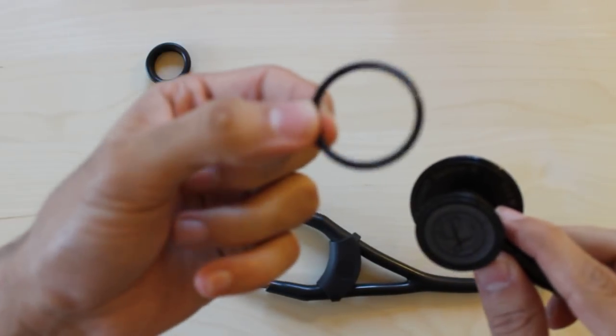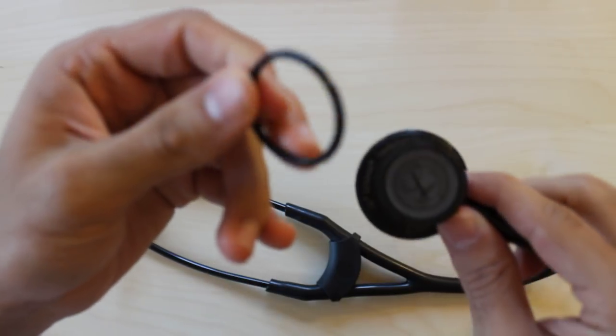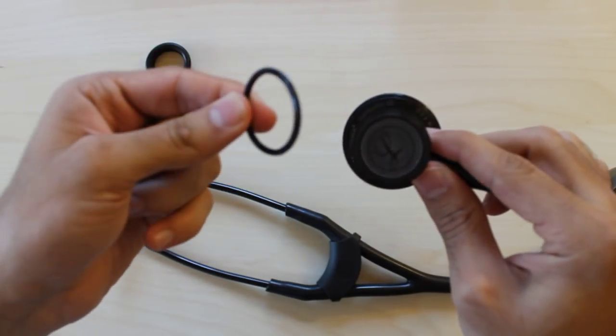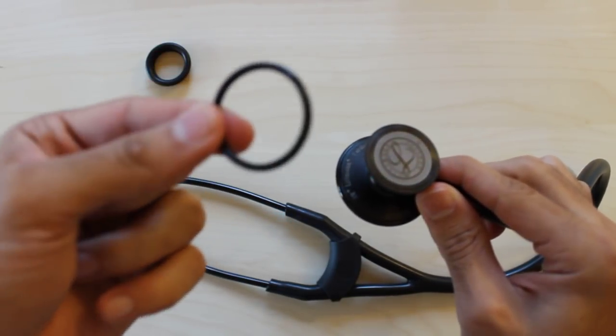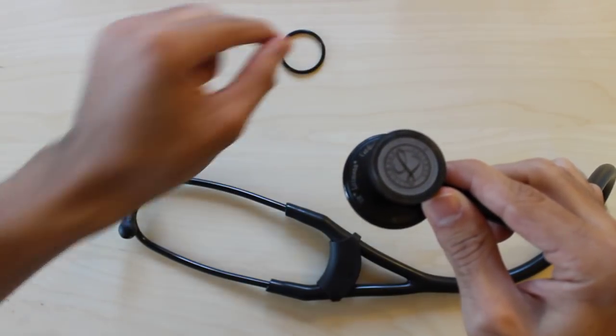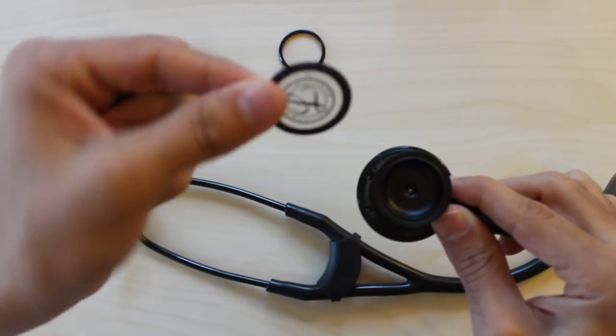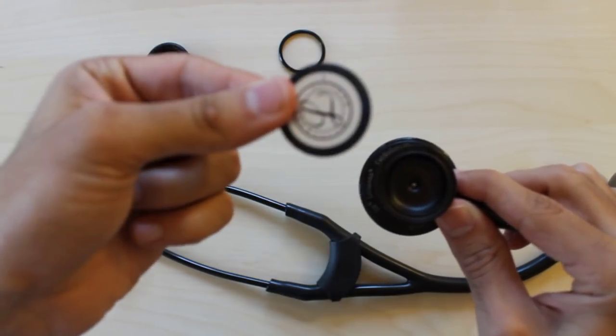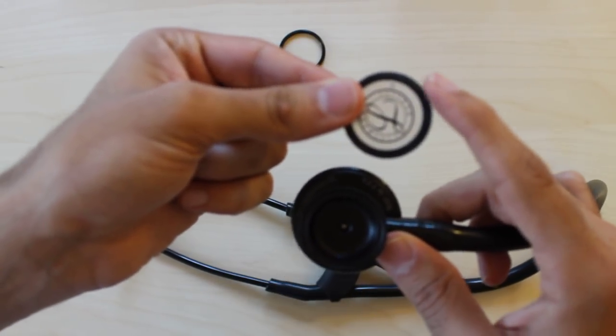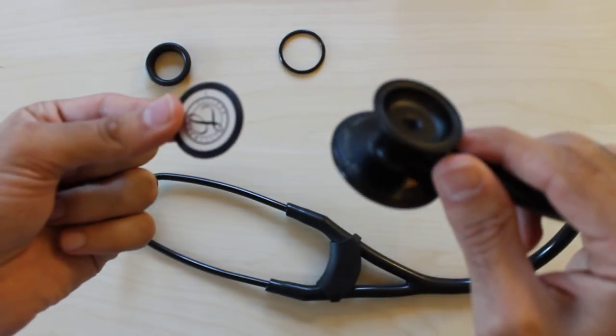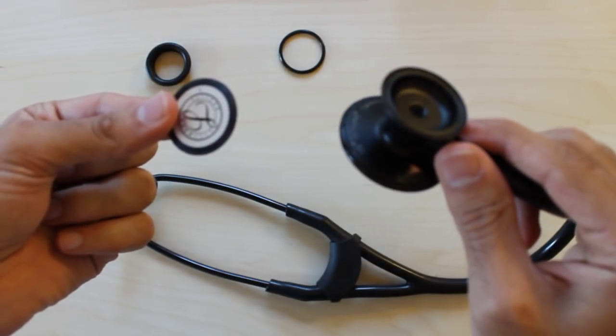And this actually holds its shape pretty well. It's good product. I just took off the actual little ring of plastic, and the diaphragm just slides right off. Here's the actual diaphragm, a very thin piece of plastic with some rubber on the edges. And then here's what you're left with, the actual bell itself.